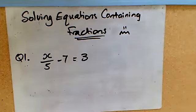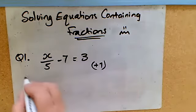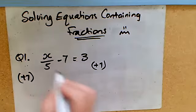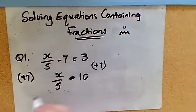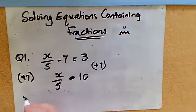If I was showing this using the balancing method rather than a function machine, I would show that I was adding 7 to both sides, leaving me with x over 5 and then 10 on this side. And then to finish off, the inverse of dividing by 5, which is to times by 5, so x would be 50.